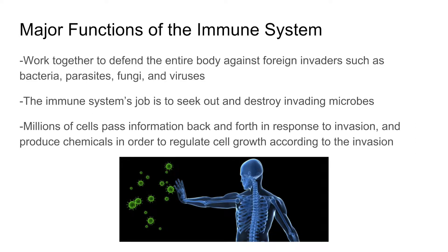Let's move on to the major functions of the immune system. The immune system is what defends your body from invading microbes and everything that could do harm to your body. These foreign invaders could be things such as bacteria, parasites, fungi, and viruses. The immune system consists of millions of cells that pass information back and forth in response to invasion and produce chemicals in order to regulate cell growth according to the invasion.